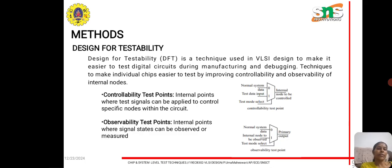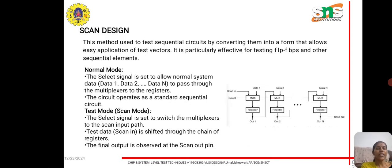Observability test points are internal points where signal states can be observed or measured. The scan design method is used to test sequential circuits by converting them into a form that allows easy application of test vectors. It is particularly effective for testing flip-flops and other sequential elements.